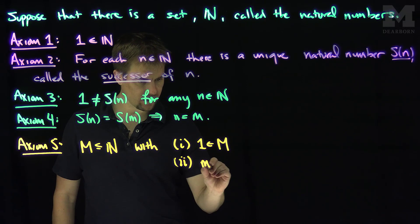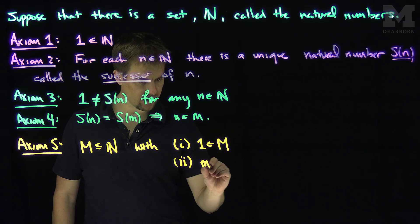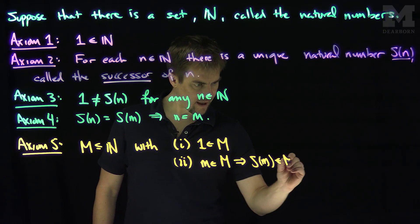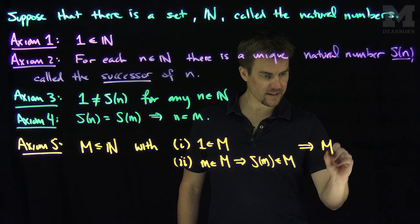and property (ii): if m is in M, then the successor of m is in M. If these two properties are true of the set M, then M equals N, the set of natural numbers.